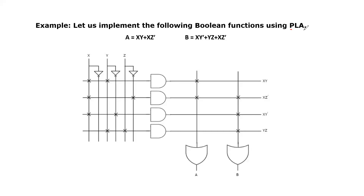Let us see one example regarding PLA. In PLA, both logic gates are programmable. The total number of AND gates required is based on the number of product terms in the given boolean functions. Here we observe two boolean functions: A has product terms XY and XZ', and B has product terms XY', YZ, and XZ'. When we observe these two boolean functions, XZ' is common to both. So instead of taking two AND gates separately, we use the same AND gate to provide the XZ' output.